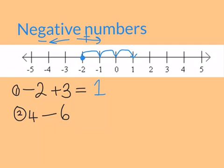Let's do the same with the next one. I start with four. This time I'm taking away, so I'm going this way. I'm taking away six. This is where I'm going to end up: negative two.